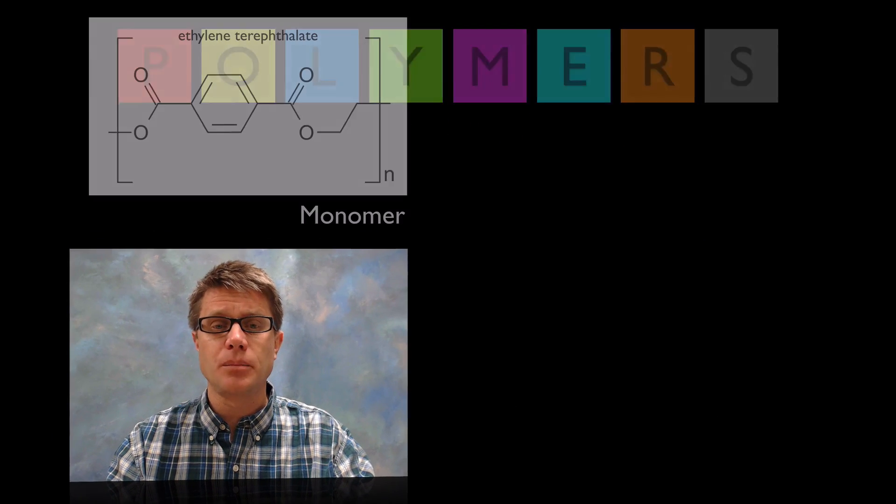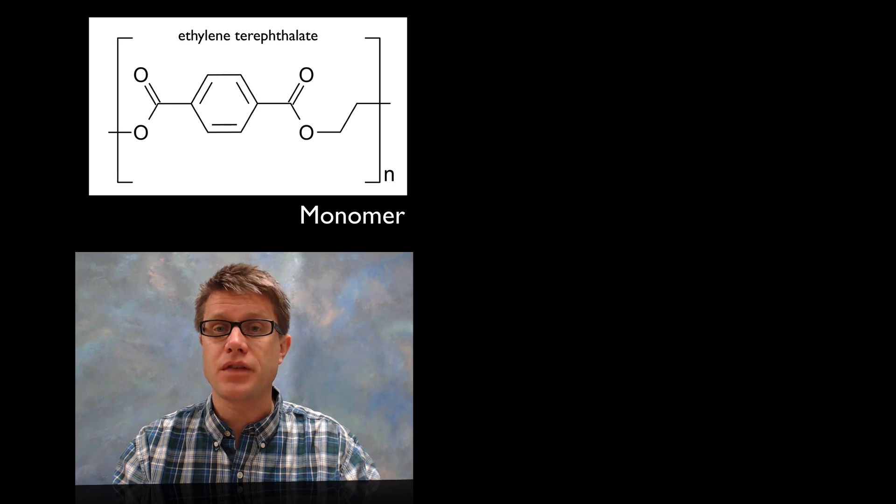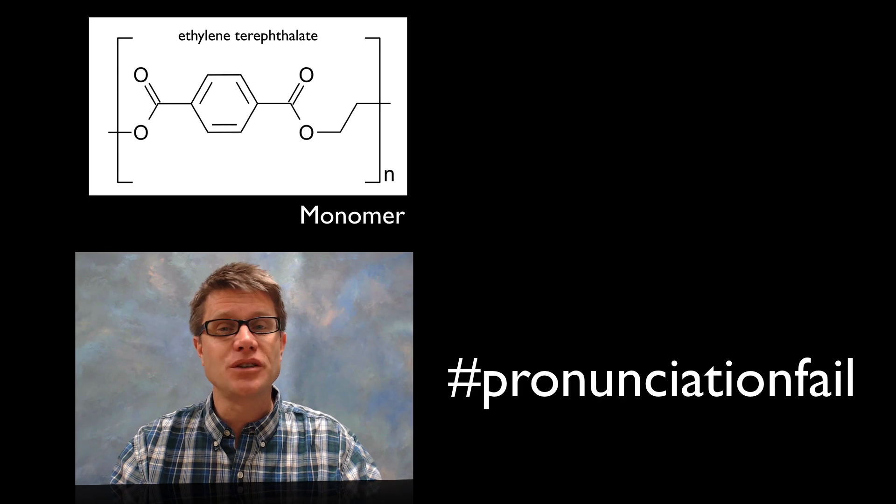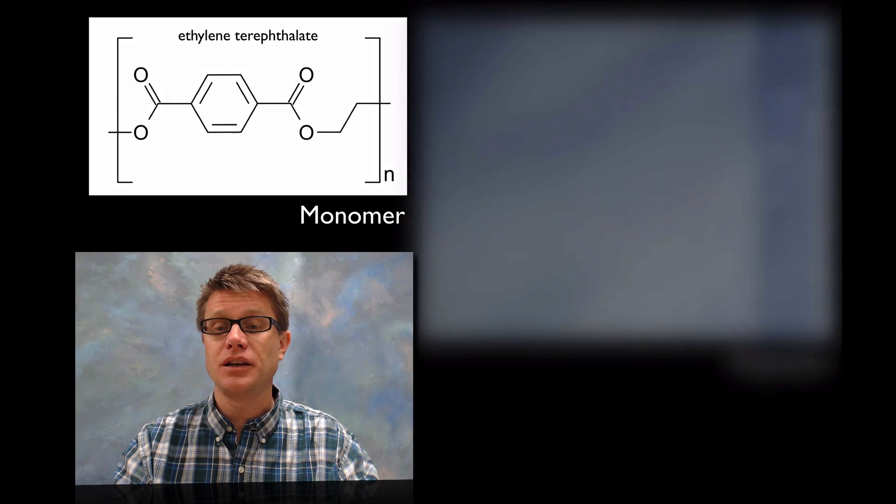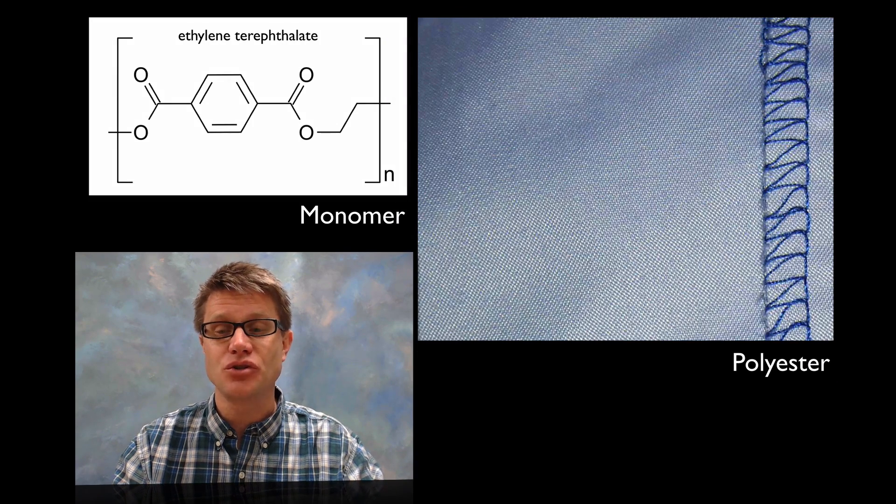And so let me show you an example of a monomer. So this monomer right here we have ethylene terephthalate. What's going to be the polymer if we attach this together? That's going to be polyester. Like a nice polyester leisure suit.